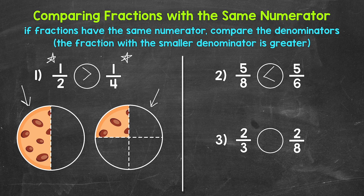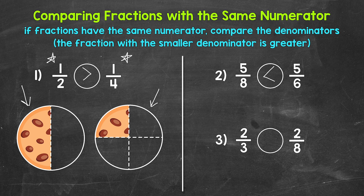Lastly, let's move on to number three, where we have two-thirds and two-eighths. Two-thirds is greater than, less than, or equal to two-eighths. We have the same numerator — two — so we can compare the denominators. The fraction with the smaller denominator is greater. Three is less than eight, so two-thirds is greater. This makes sense: a whole divided into three equal parts has bigger parts than a whole divided into eight equal parts. Two-thirds represents more of the whole than two-eighths. So our comparison symbol goes like this, and we read our comparison as two-thirds is greater than two-eighths.